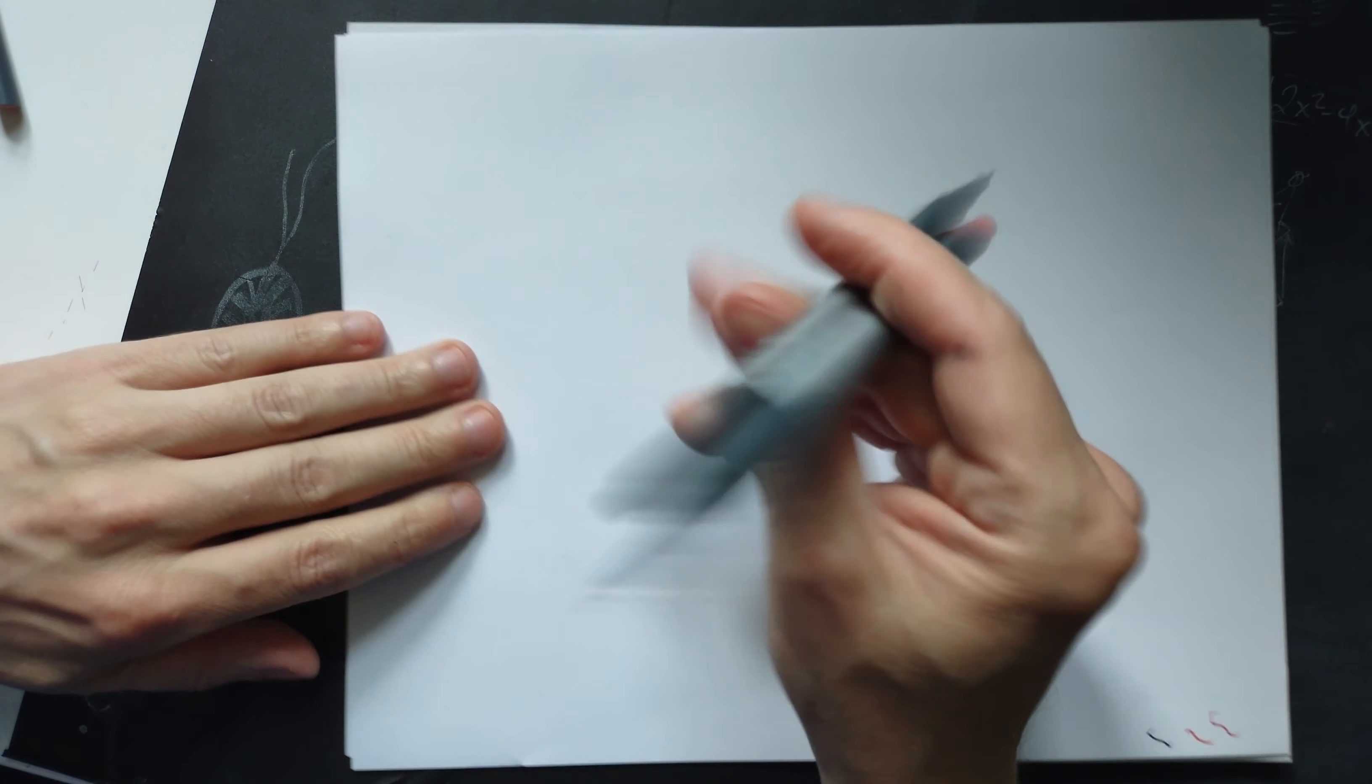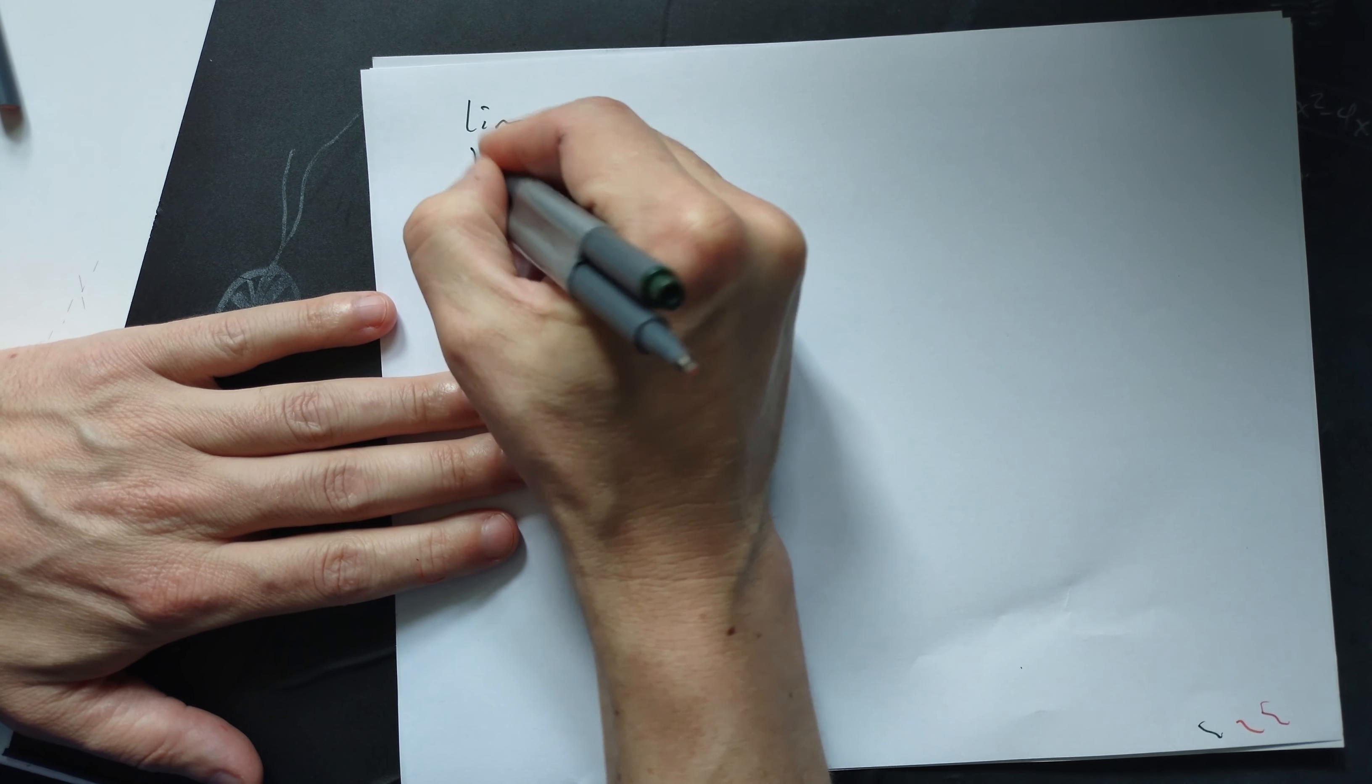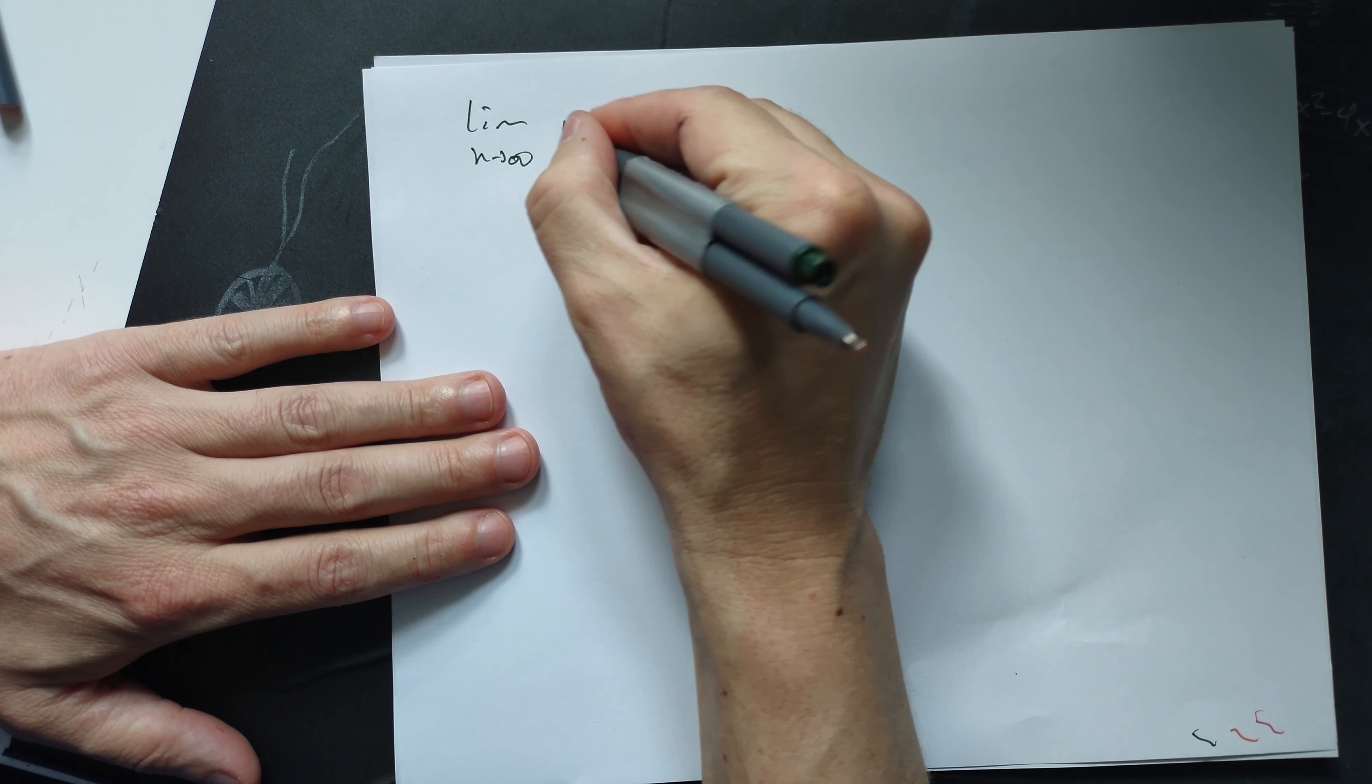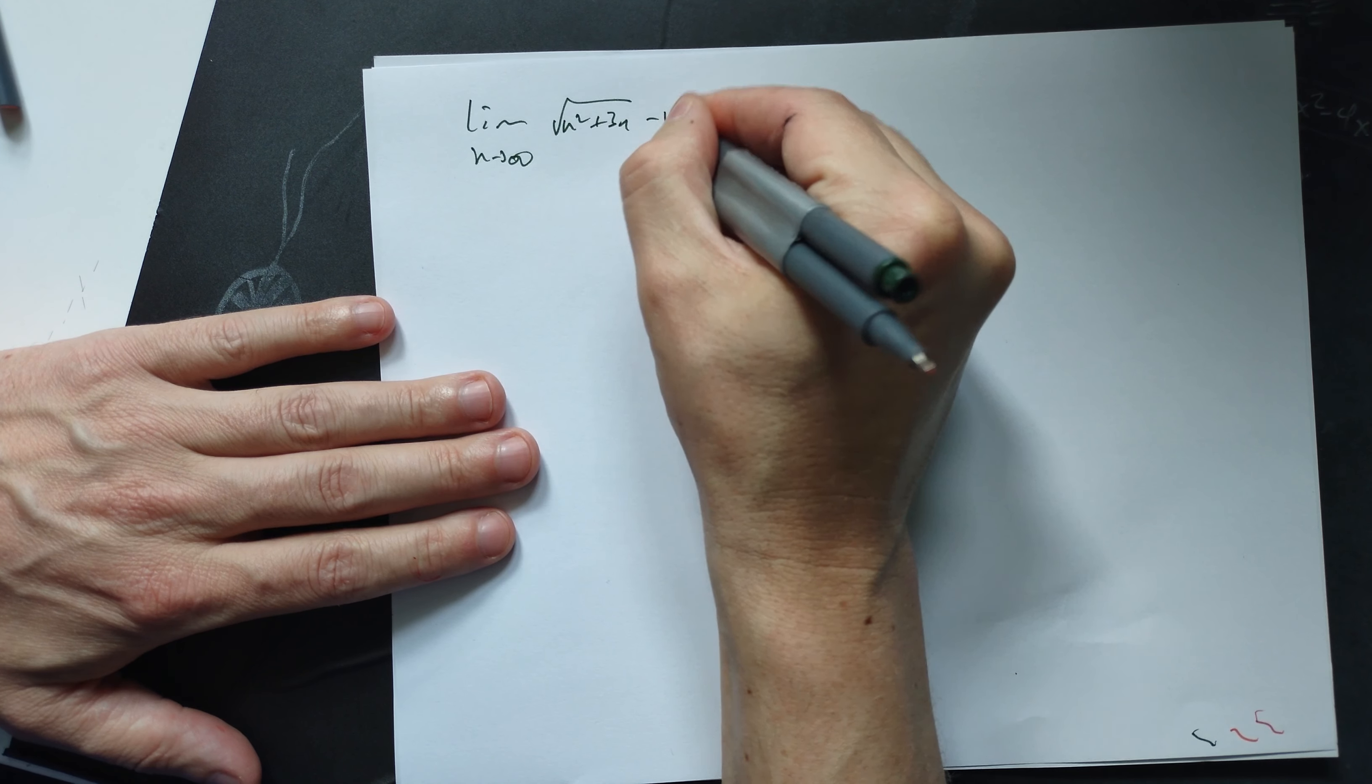Welcome friends. Let's find the following limit as n goes to positive infinity of √(n² + 3n) - n.